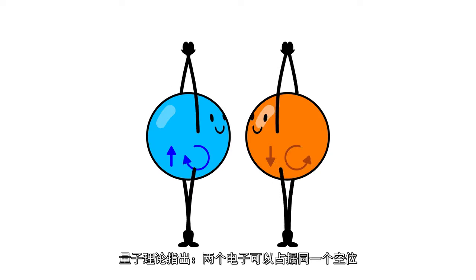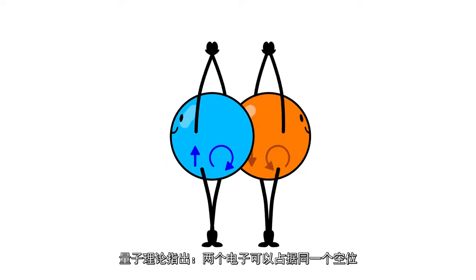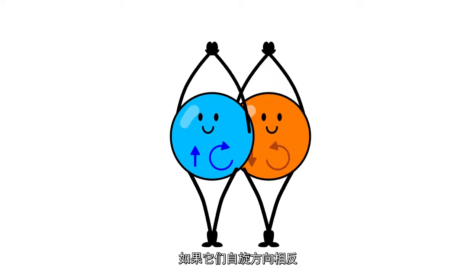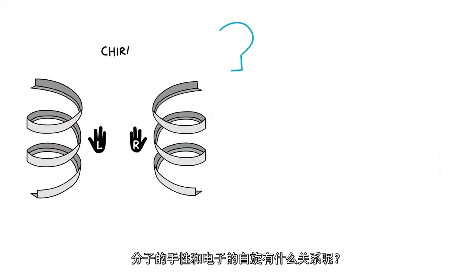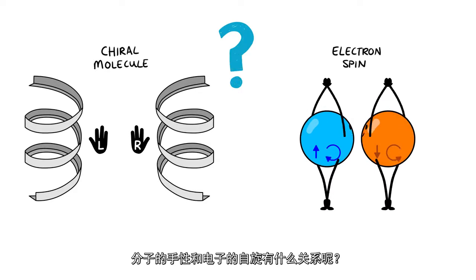Quantum mechanics shows that two electrons can occupy the same volume if they have opposite spins. When two electrons have the same spin, they repel each other. How do the chirality of molecules and spin relate?